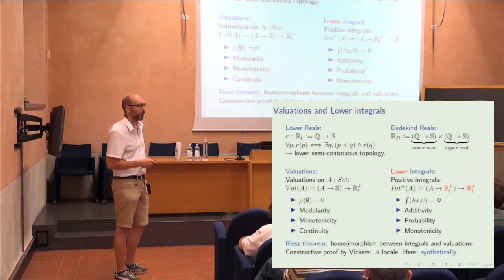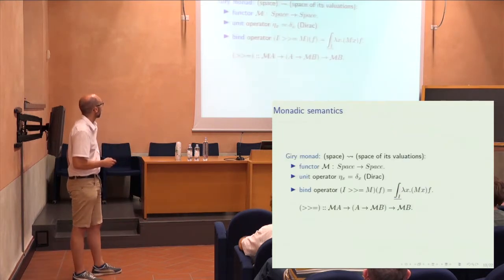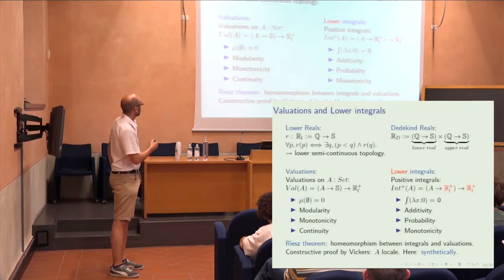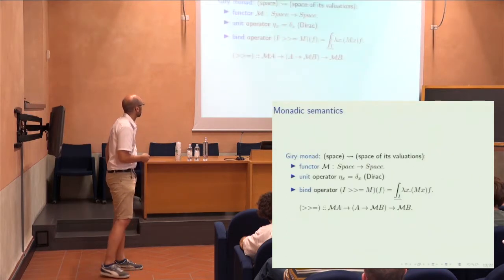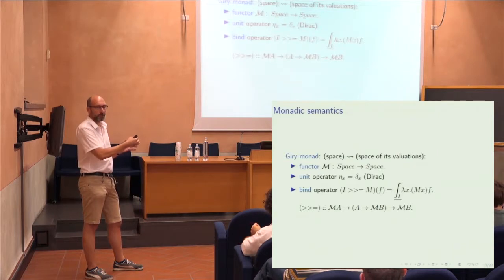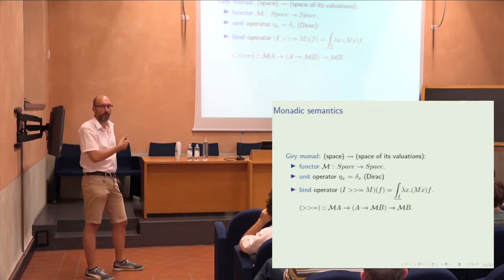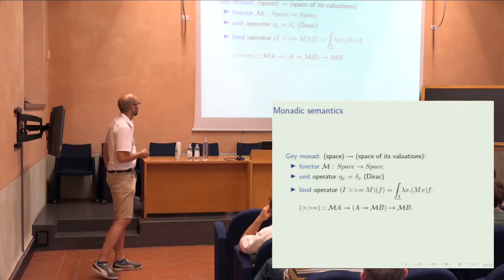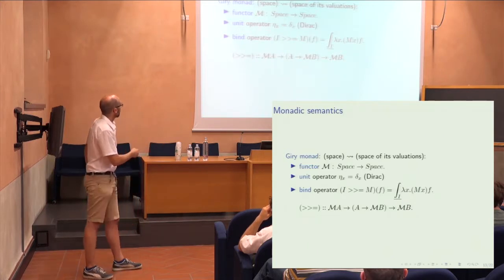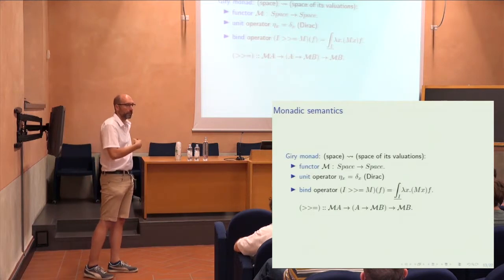We purely formally drop the condition of having a locale and use any set in the synthetic topology setting, change the locale by a map, and do basically the same construction — and it actually works. Once we have constructed the valuations, we can look at the Giry monad: take all your spaces or sets in your topos for synthetic topology, and go to the space of its valuations. I'm presenting this as a Kleisli triple — the way Haskell programmers use it — which is equivalent to the standard monadic presentation. The unit operation is the Dirac measure, and the bind operation is integration.